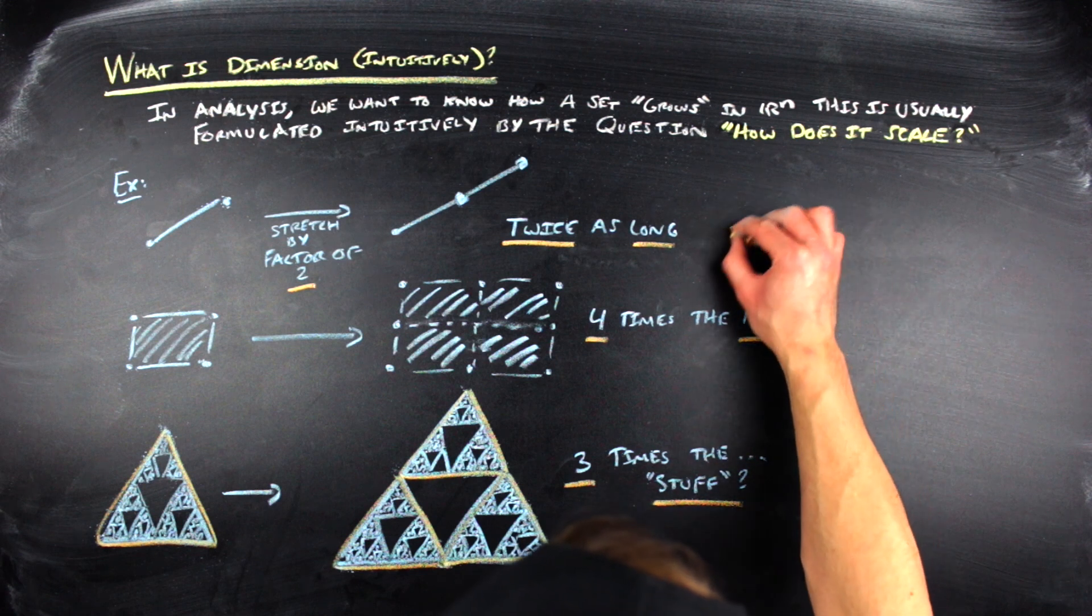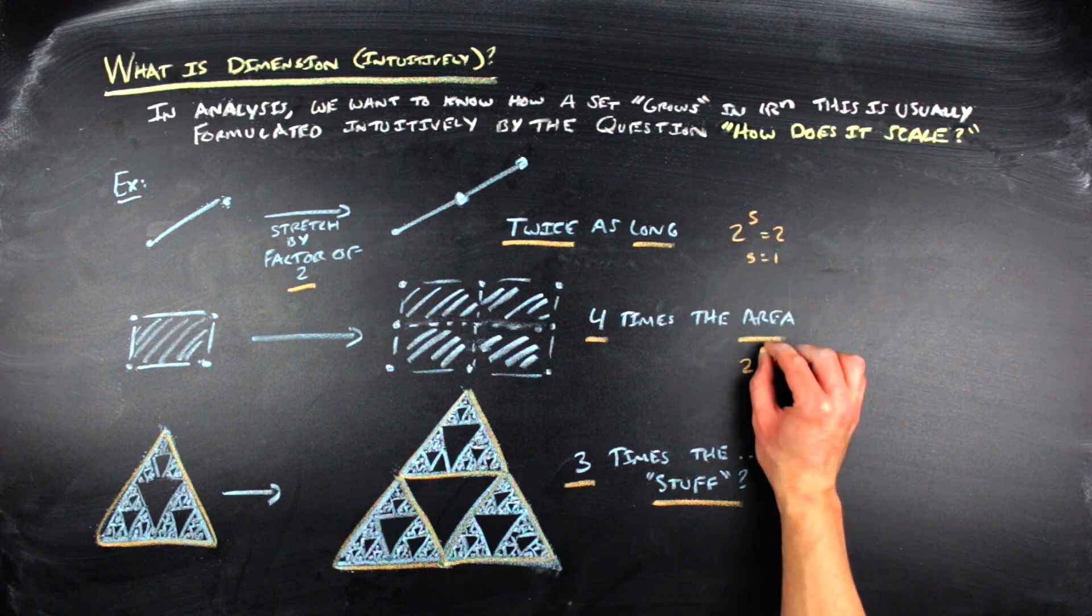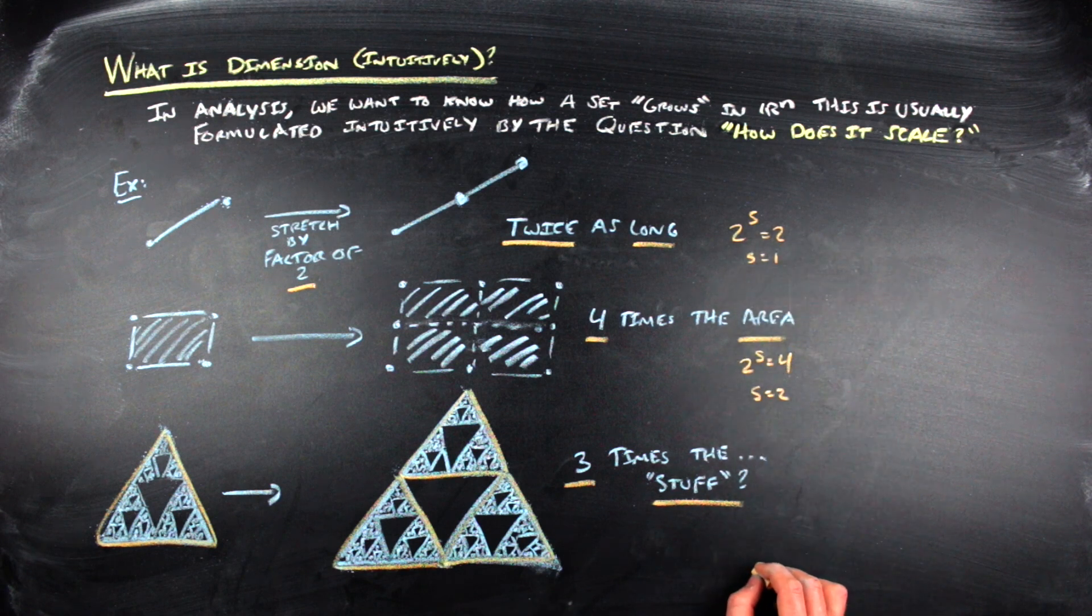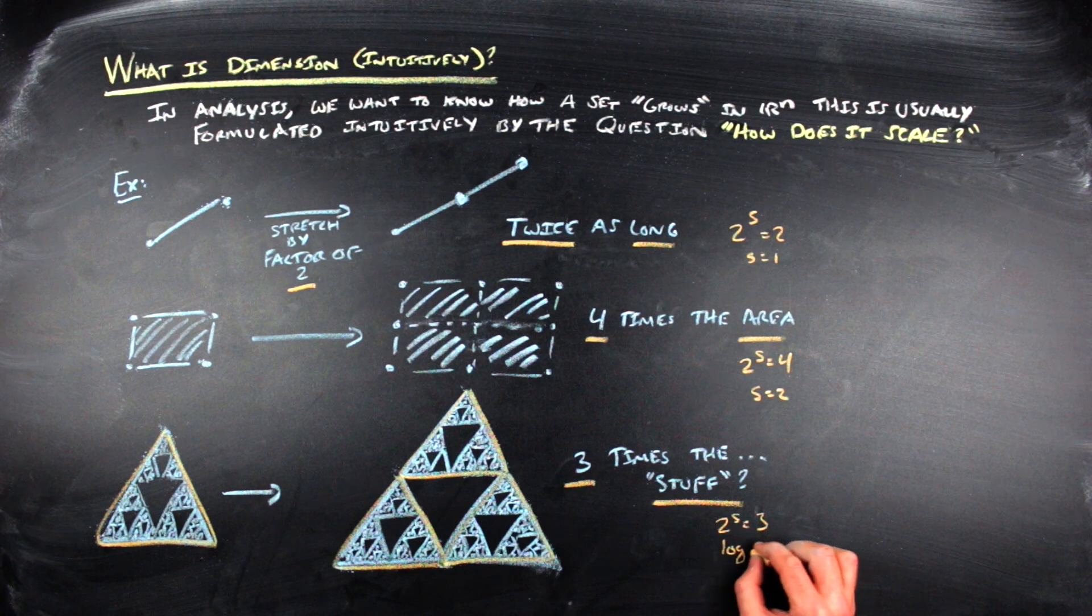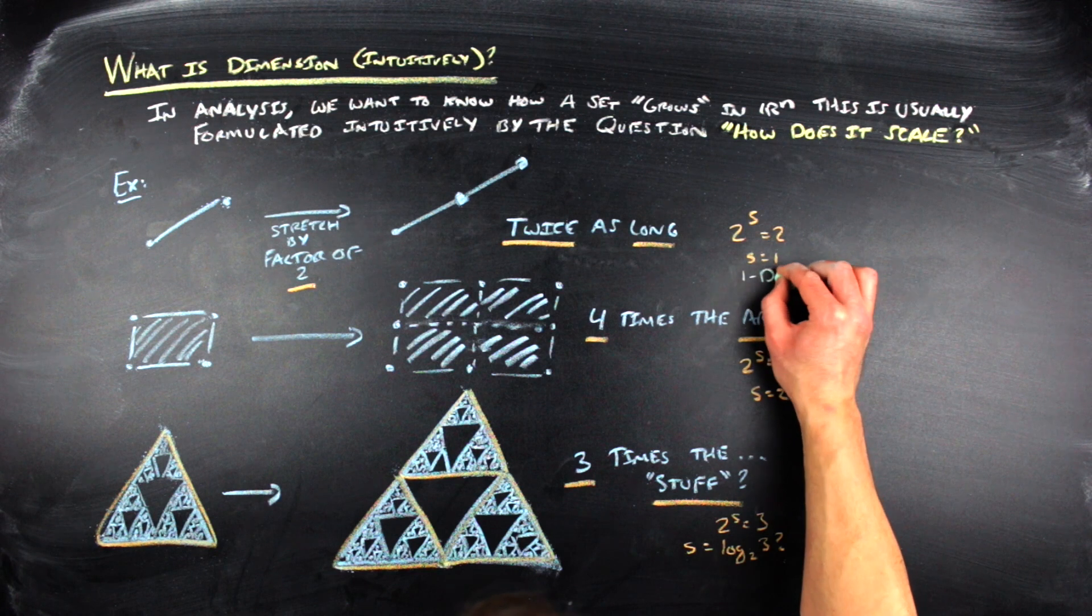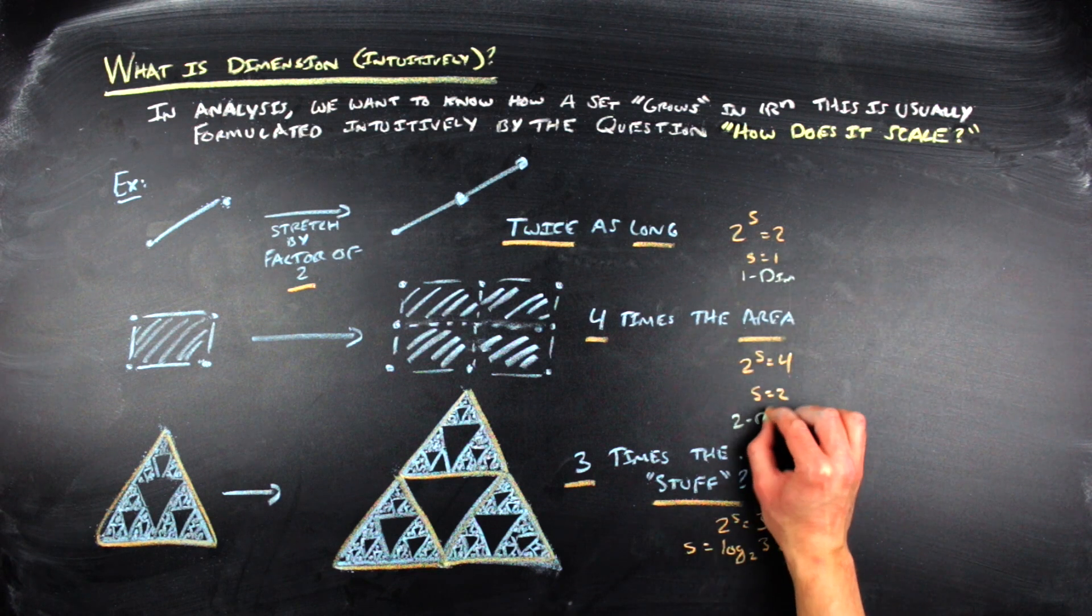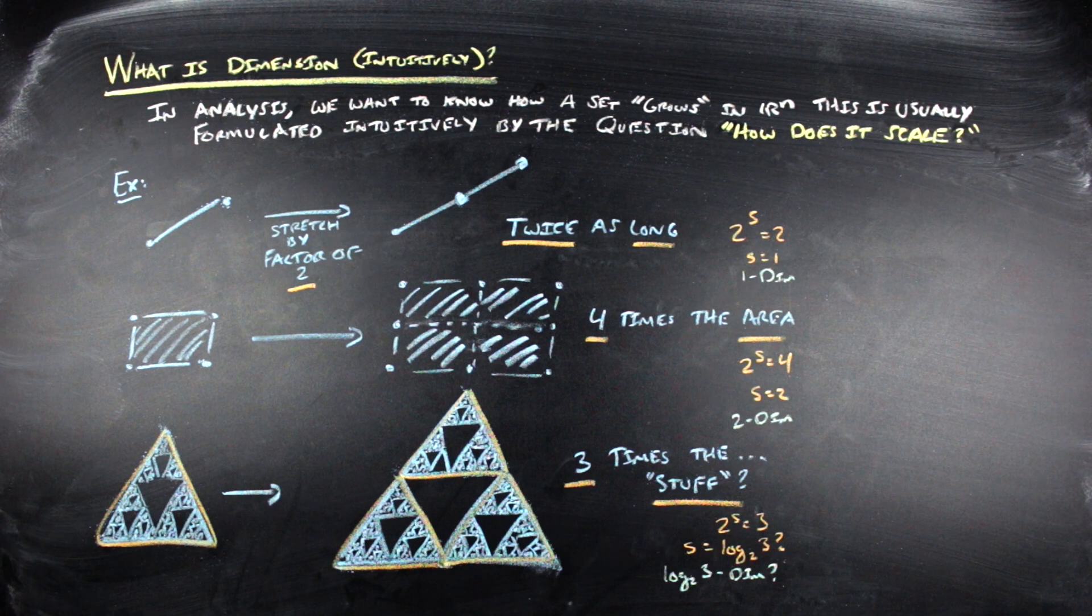There are two things happening here. The first is that we're changing the dimension of the object that we're scaling in the naive sense. If you look at a line, we naively say that is a one dimensional object. In the second example, we have this two dimensional box. And in the last example, the object should be a log base two of three dimensional object. And why does that make sense?